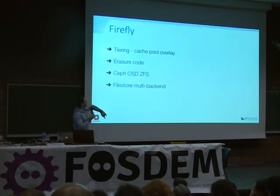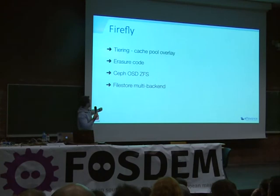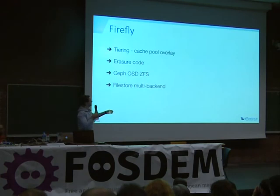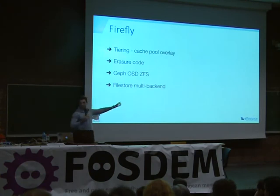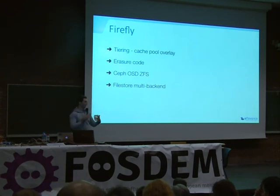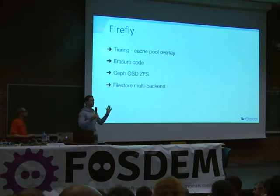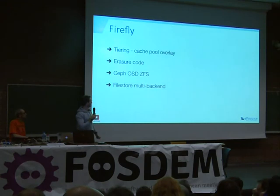Last but not least, Firefly is coming in February — that's the next stable release of Ceph and will be the first LTS (long-term support) version. Tiering will be available — fast and cold data, erasure coding, RAID-5 over distributed systems. Also, file store backend: by default objects in Ceph are stored as files on a file system, but we can do this more efficiently using backends like RocksDB, LevelDB, or NVMKV from FusionIO, so we no longer need the file system to store files.